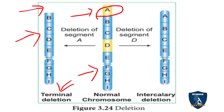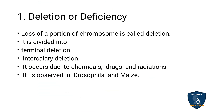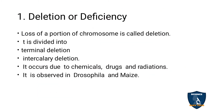In the same way, if the deletion occurs in the middle of the chromosome, it is called intercalary deletion — intercalary means middle. You can see there is no D; the D segment is absent. So deletion, or deficiency, is the loss of a portion of a chromosome, and it is divided into terminal deletion and intercalary deletion.